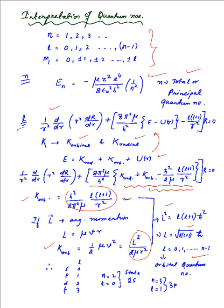The various angular momentum states of the electron are denoted by the letters s, p, d, f, corresponding to values of l as 0, 1, 2, 3, and so on. The atomic states are denoted by writing the corresponding principal quantum number along with these letters. For example, the state 2s has n equal to 2 and s corresponds to l equal to 0; likewise, if n equals 3 and l equals 1, then the state is 3p, where p represents l equal to 1.